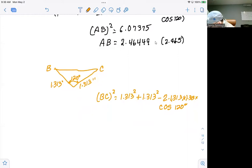And let me, you can do some simplification of this. We have 1.313 squared plus another one. So that's actually two times 1.313 squared. And then minus two times 1.313 squared times the cosine of 120.